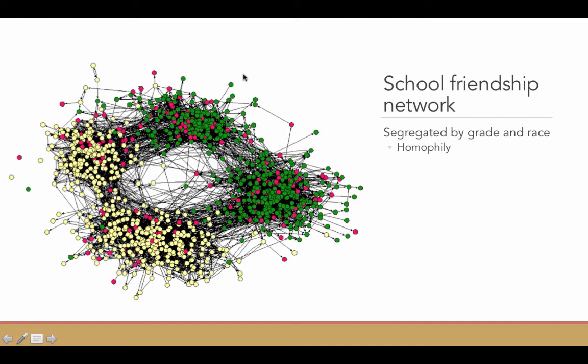If you look at the top here, this is middle school students. And down here are high school students in the high school that's connected to the middle school. They're also, the network is also segregated by race. You have yellow dots indicating white students, green dots indicating African-American students, red dots indicating students of another race or ethnicity.